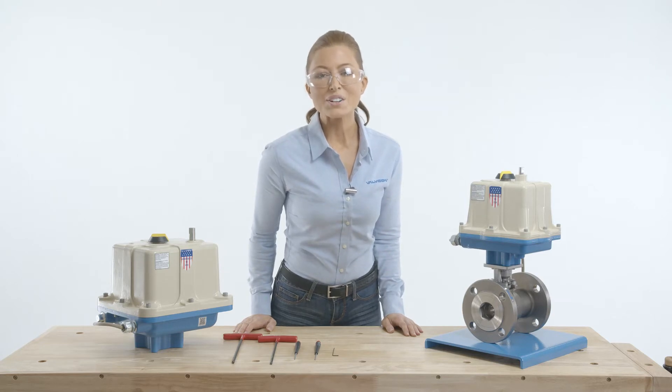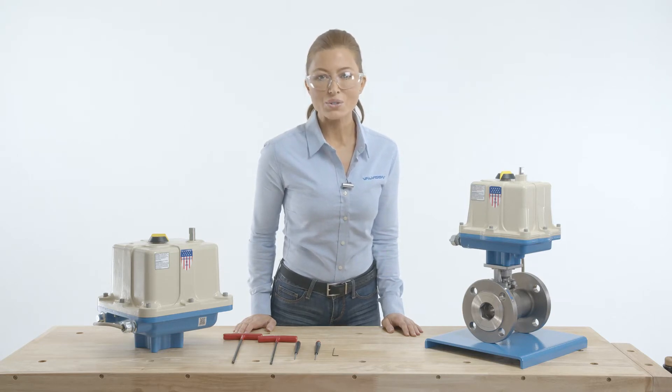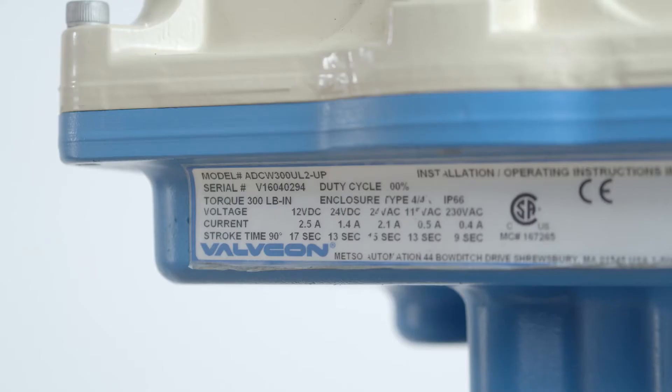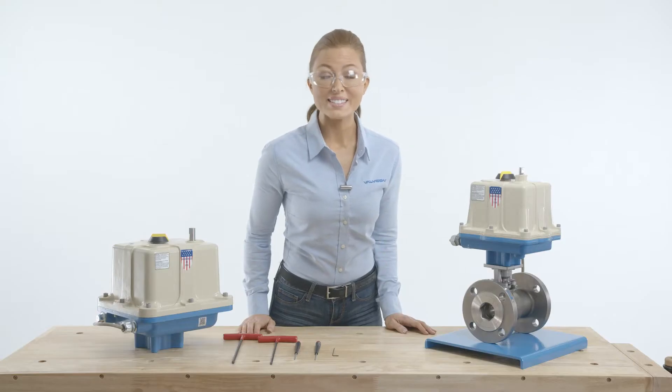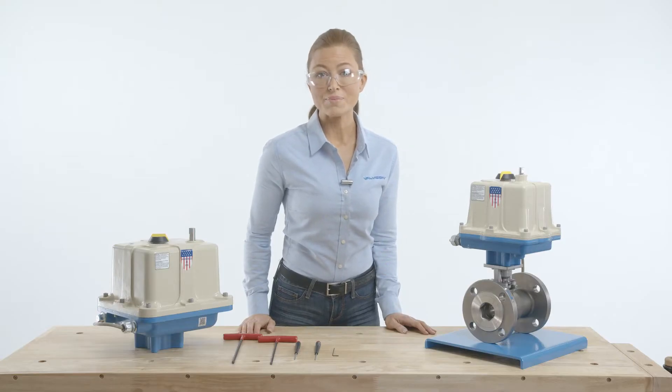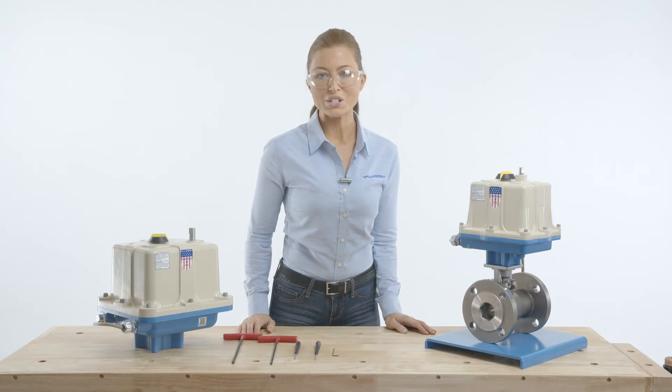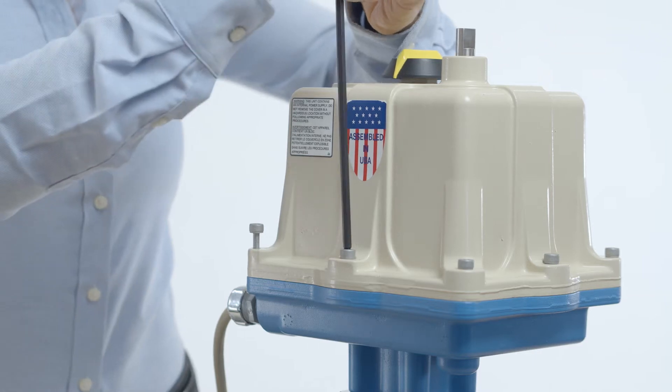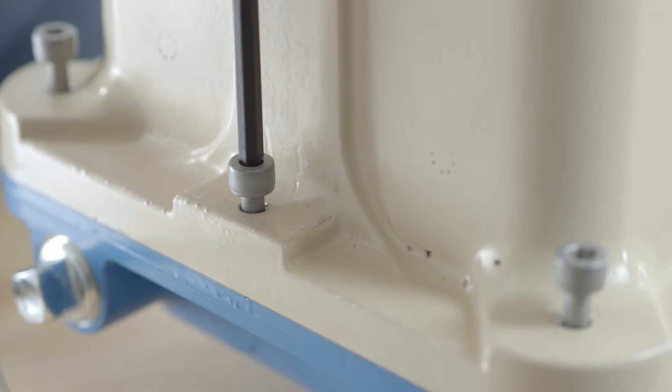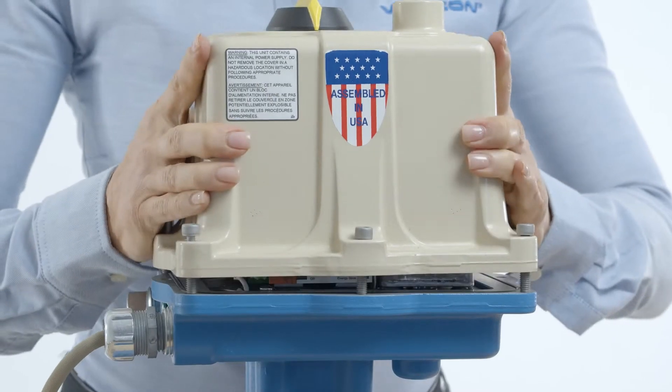Alternatively, model codes that contain UL2, UL3, or similar indicate the presence of a sealed lead acid battery. The model codes also indicate the standard 90 degree operation or the optional 180 degree or 270 degree operation. Please consult your model number and the how-to order section of the product manual for additional information.